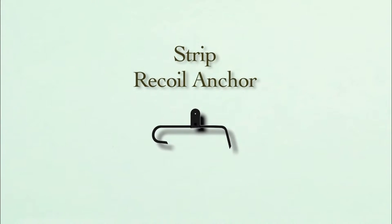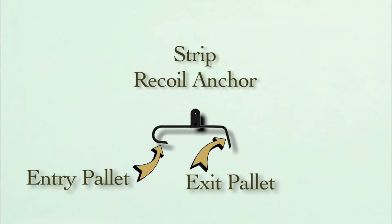There are three distinguishing features that help identify a recoil escapement. First, the anchor is asymmetrical, which means the entry and exit pallets have distinctly different shapes. The strip version of the recoil anchor looks much like an unfolded paper clip. The entry pallet is shaped like a hook. The exit pallet is a simple angle, somewhere around 90 degrees.